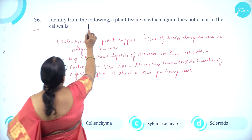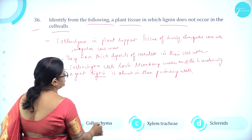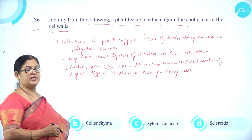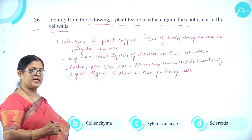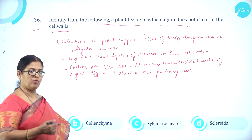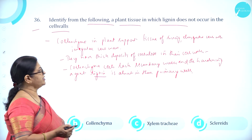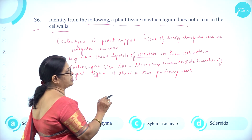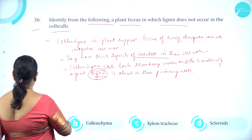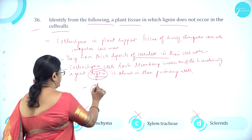Moving on to question number 36. Identify the plant tissue in which lignin does not occur in the cell walls. Option A sclerenchyma fibers, option B collenchyma, option C xylem tracheae, option D sclereids. Collenchyma and sclerenchyma are both mechanical tissues — collenchyma is the living mechanical tissue and sclerenchyma is the dead mechanical tissue. Sclerenchyma provides mechanical support due to its lignified walls, but lignification is absent in collenchyma. Collenchyma cells lack secondary walls and the hardening agent lignin. So option B collenchyma is correct.